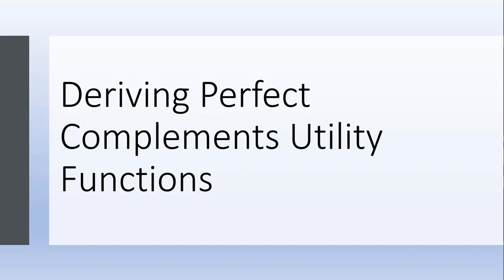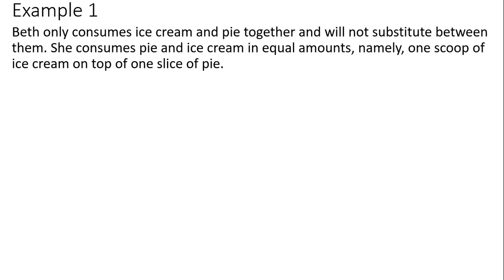Example 1. Beth only consumes ice cream and pie together and will not substitute between them. She consumes pie and ice cream in equal amounts, namely one scoop of ice cream on top of one slice of pie.